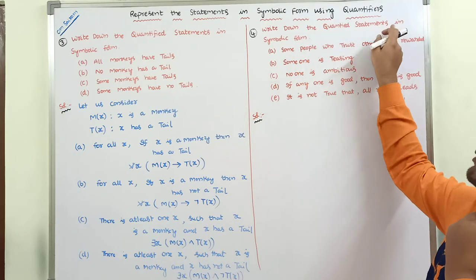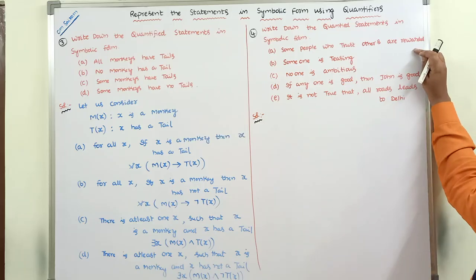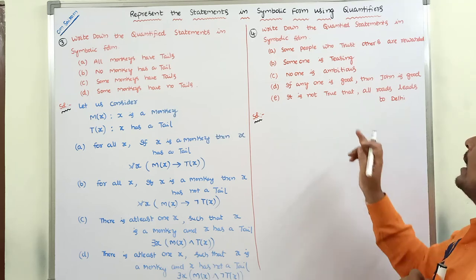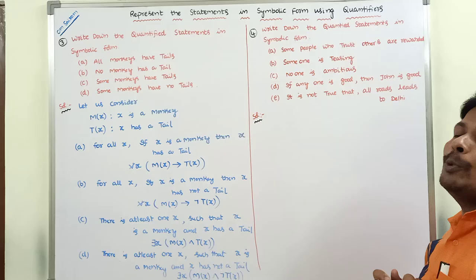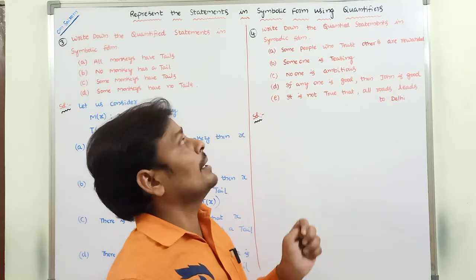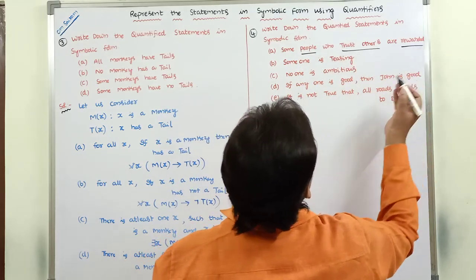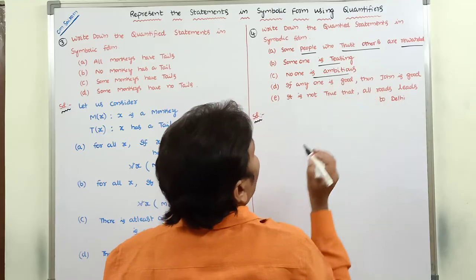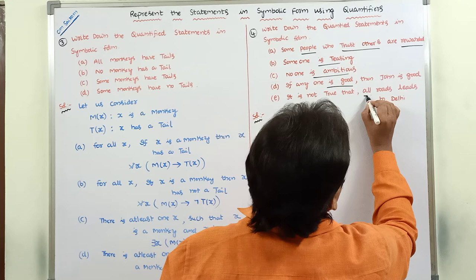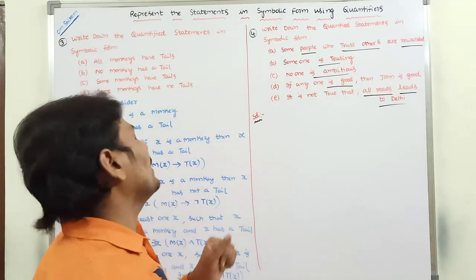Next problem: write down the quantified statements in symbolic form. First statement: some people who trust others are rewarded. Second: someone is teasing. Third: no one is ambitious. Fourth: if anyone is good, then John is good. Fifth: it is not true that all roads lead to Delhi. The predicates present here are: people, trust others, rewarded, is teasing, is ambitious, is good, and leads to Delhi.